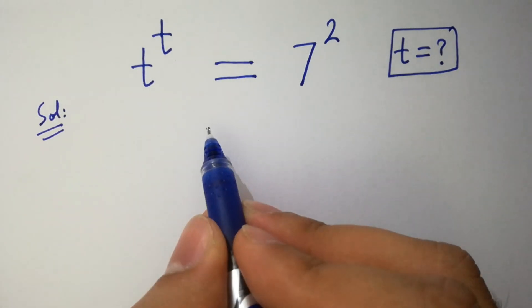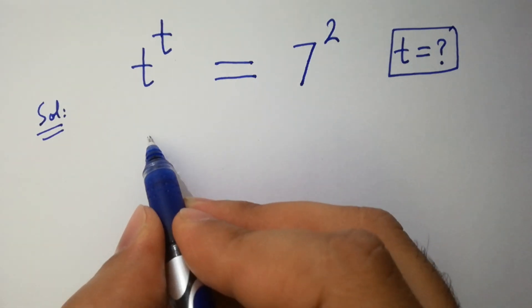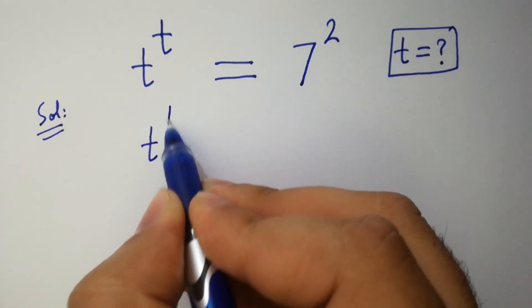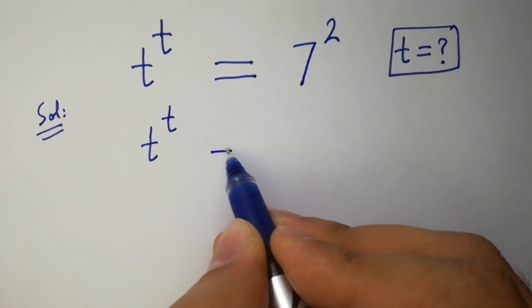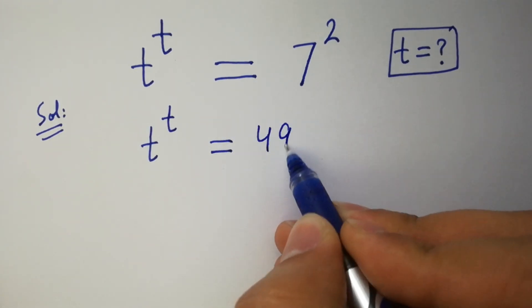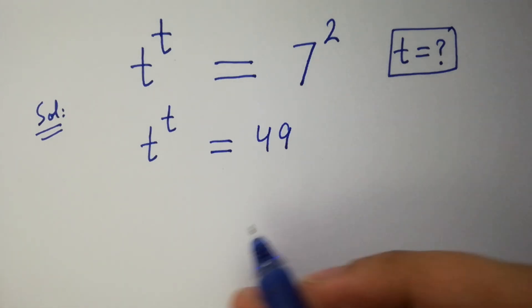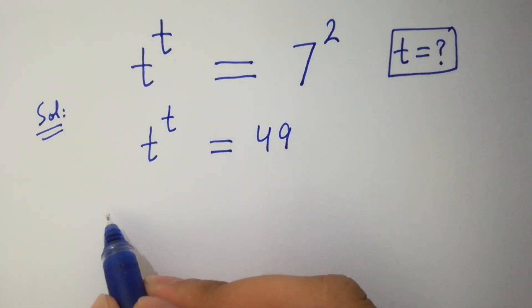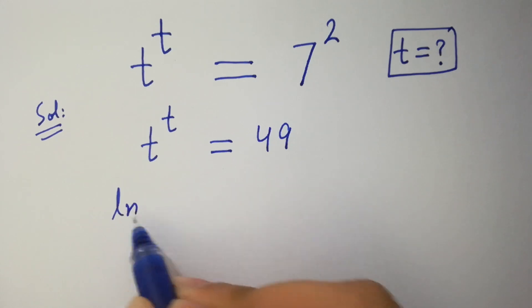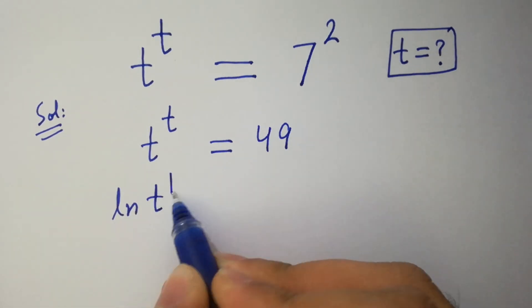This question is the same as t to the power t equals 49, since 7 squared is 49. Take natural log ln on both sides.